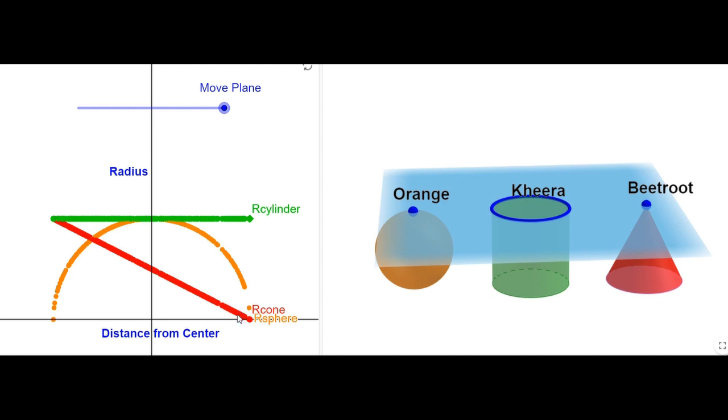Now you see the radius of the cone which has been shown here with the red dot. You can see that its increment is linear with respect to its height. But whereas you see the rate of change in the sphere, it's not a linear one.